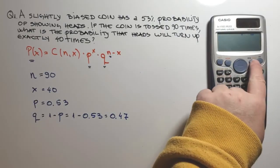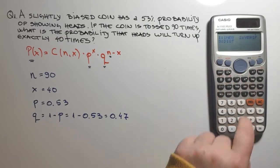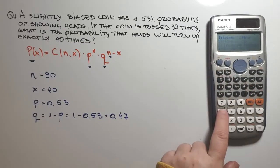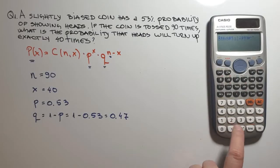So we go to mode, we go down once and we choose 3 for distribution. We press 4 for binomial and now 2 for variables.